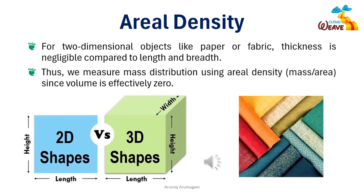Now, when it comes to objects like paper or fabric, which are primarily two-dimensional, we face a different scenario. The thickness of these materials is negligible compared to their length and breadth. Therefore, instead of measuring their density in the traditional sense, we use what's called aerial density, which is the mass per unit area. This allows us to effectively measure the mass distribution over a flat surface.